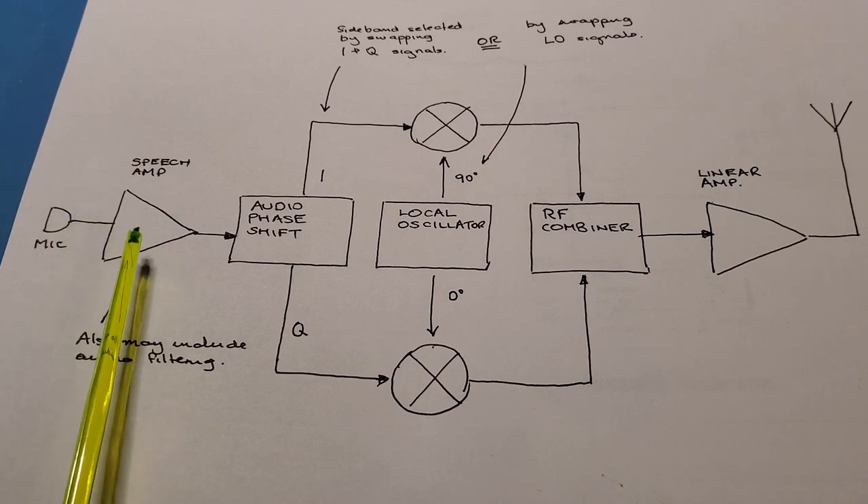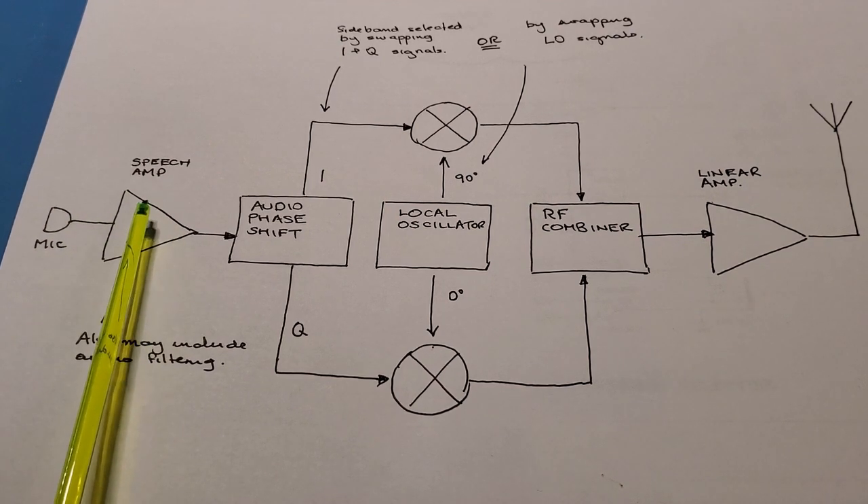Voice starts at the microphone, then passes through the speech amplifier which performs dual duties: amplifying the signal from the microphone and filtering out unwanted signals outside of the audio frequency. Then we pass it into the audio phase shift network, almost exactly the reverse of the phase shift network in the receiver side. An audio signal comes in and we produce I and Q audio signals as output.